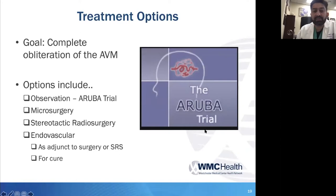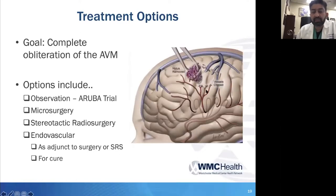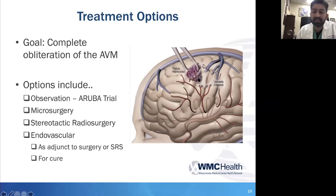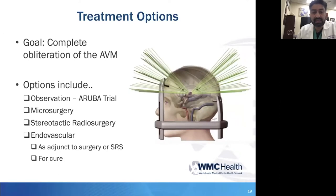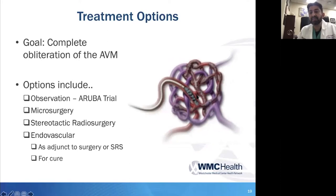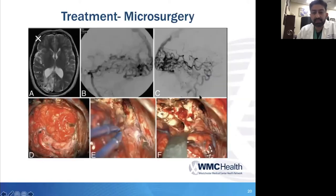With observation, we're going to talk about the ARUBA trial. For microsurgery, we're going to talk about actually removing the entire nidus and the larger principles in reviewing and removing the nidus. Stereotactic radiosurgery principles we'll touch on briefly. And then endovascular in the U.S. comes in two different flavors in terms of agents used, but now there's also a broadening role of transarterial and transvenous embolization.